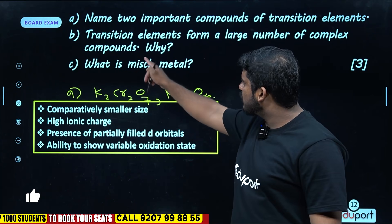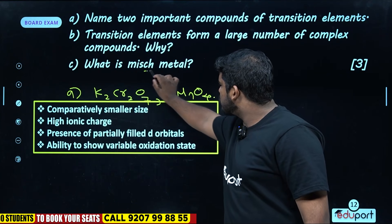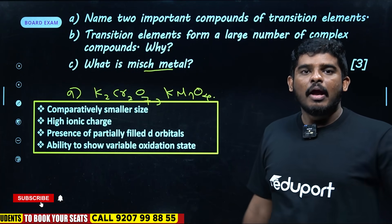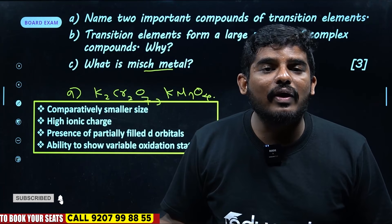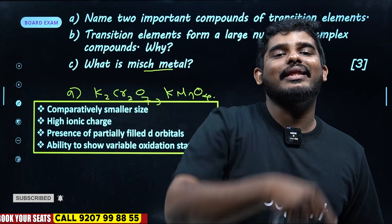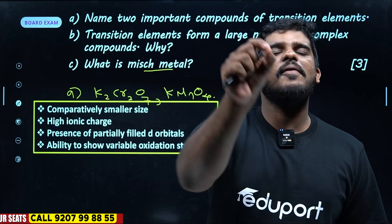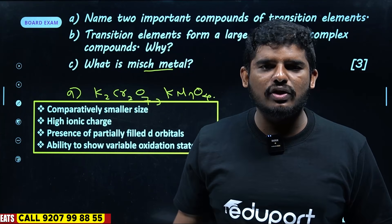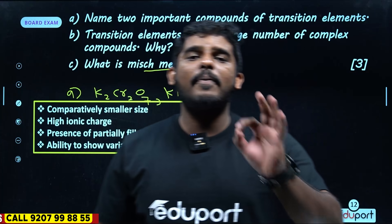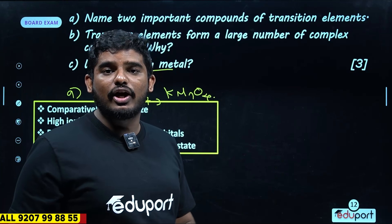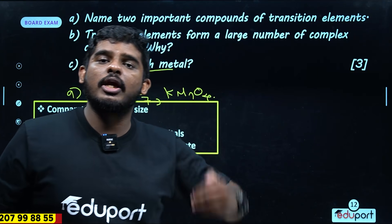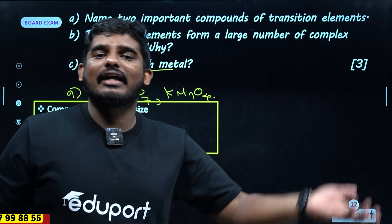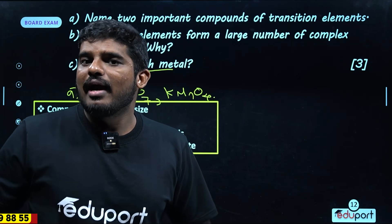What is misch metal? Misch metal is an alloy of lanthanoids — it is 95% lanthanoids and 5% iron, along with traces of carbon, aluminum, sulfur, and calcium elements.